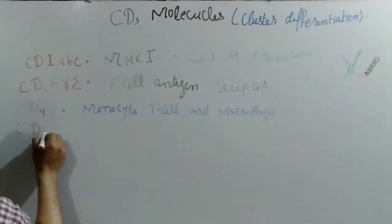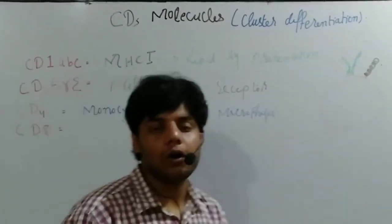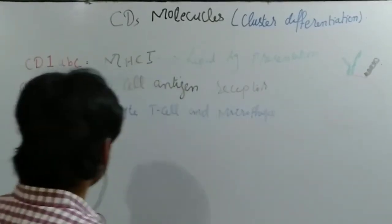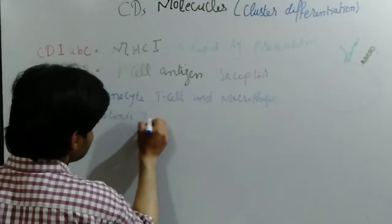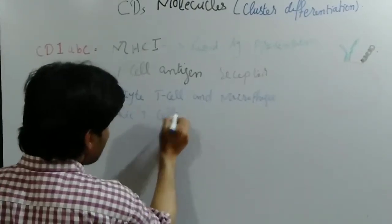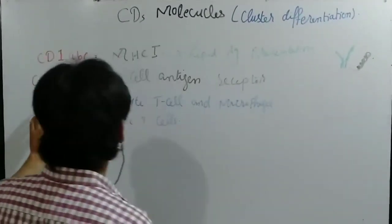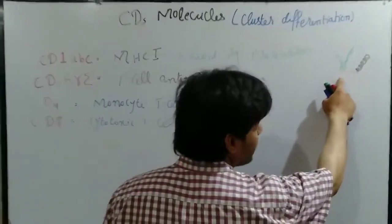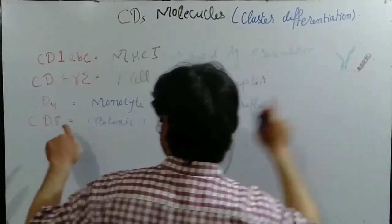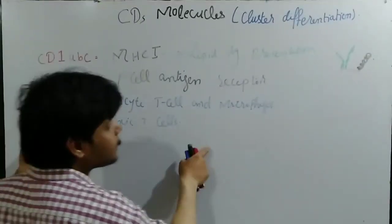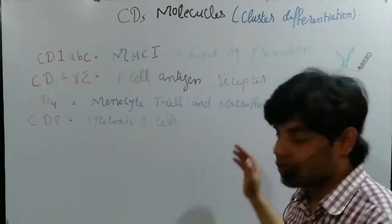CD8 molecules are usually present on cytotoxic T cells. Just as CD4 molecules are present with MHC2 molecules, CD8 molecules are present with MHC1 molecules on the cytotoxic T cell.